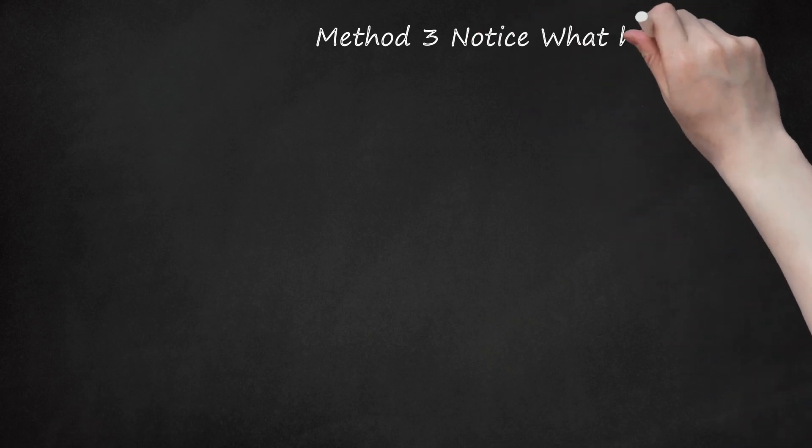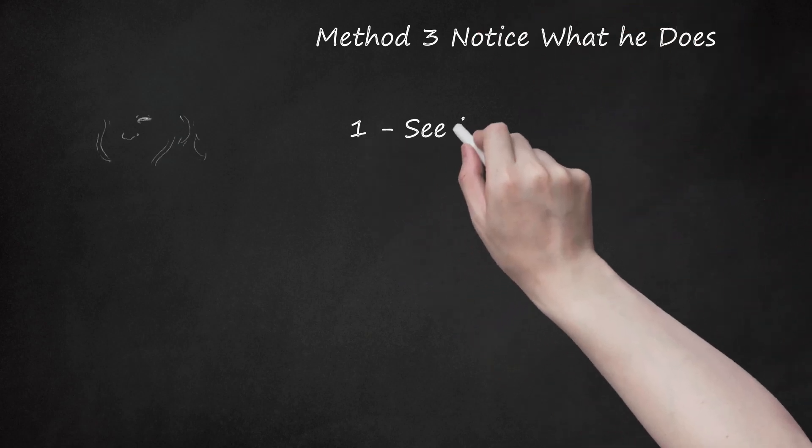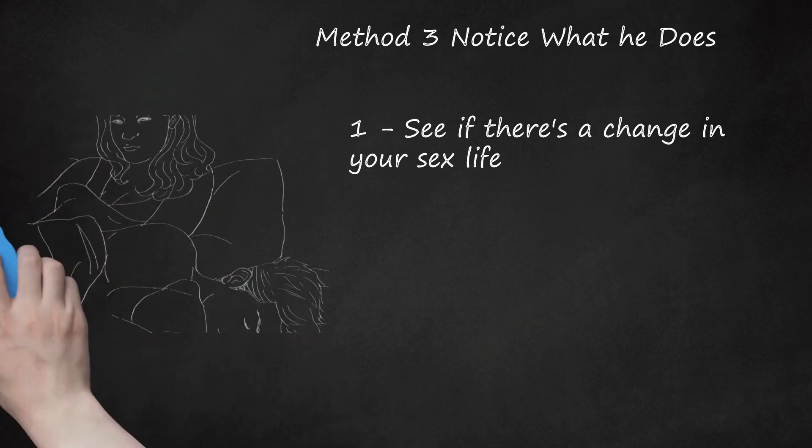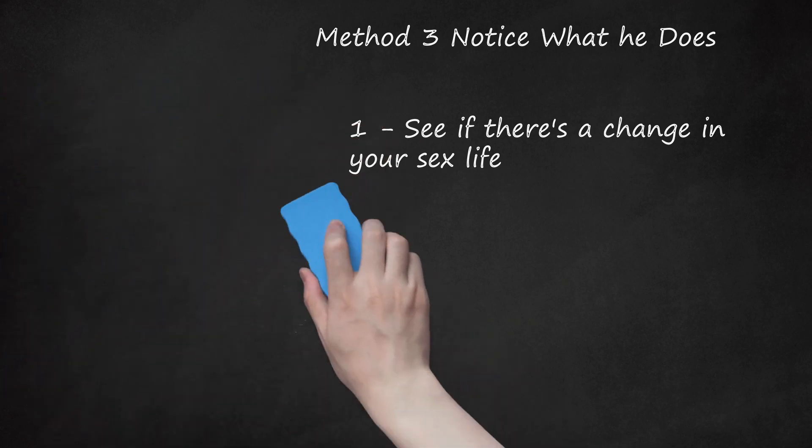Method 3: Notice what he does. See if there's a change in your sex life. If he has another girlfriend, he may stop spending as much time in the bedroom with you, but it could also make him want to have more sex. Here are some things to look for. If you're having a really long dry spell. If he never wants to have sex anymore, he may be getting it somewhere else. If he suddenly has a voracious sexual appetite. If he wants to have sex all the time all of a sudden, it may be because his sex drive has gone up from sleeping with another lady. If he tries a ton of new moves in bed, he could be picking these up from another girl.